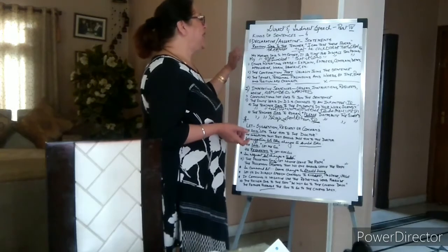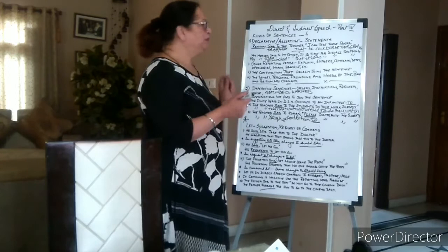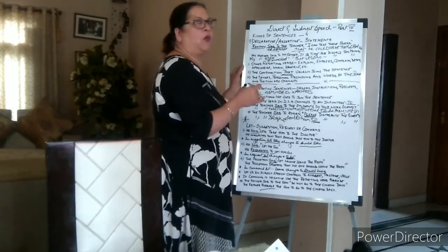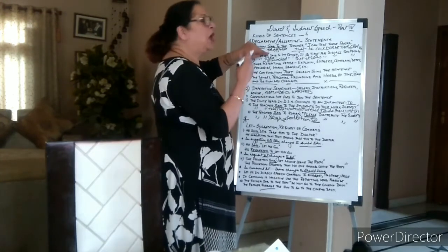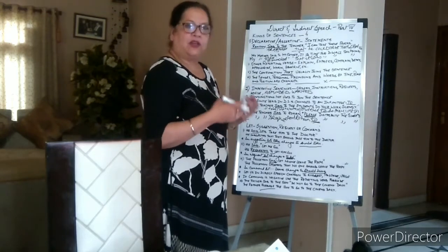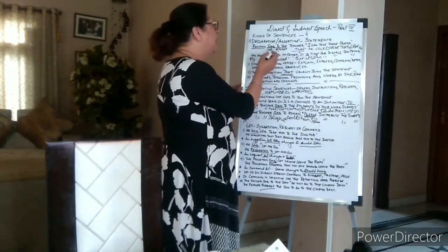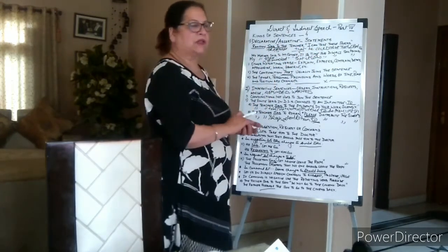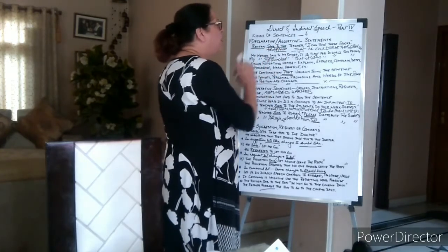How these declarative or assertive sentences are linked with direct and indirect speech — when the reporting verb is 'said to', it turns to 'told'. But instead of 'told', we can change it according to the content of the sentence. Here, 'I can take these books' means he has volunteered or offered to take the books. So instead of 'told', you can write: Rajan offered to the teacher that he could take those books.